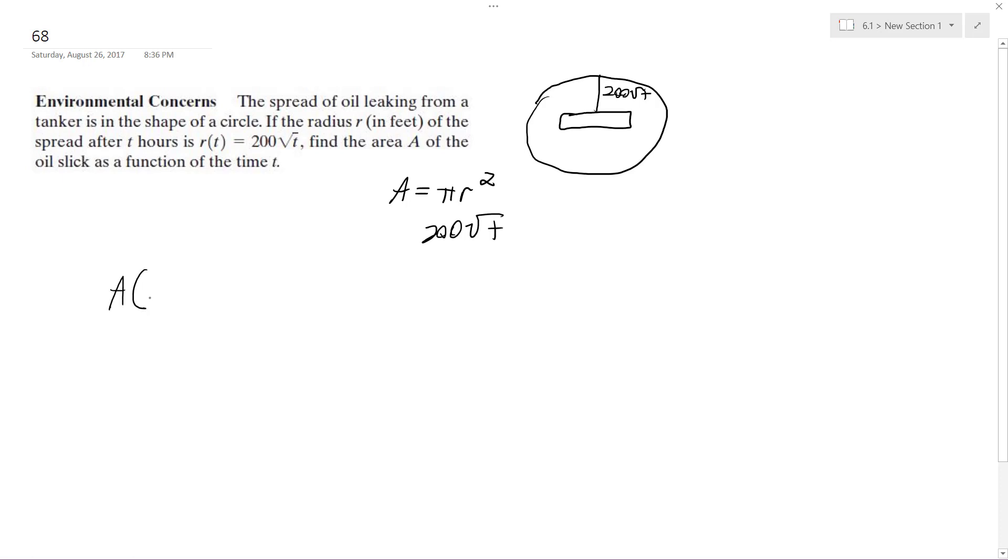So area as a rate or area of the rate in respect to time is going to be equal to area times rate times t. So this simply becomes area of 200 square root t. We're going to plug this into our area equation.